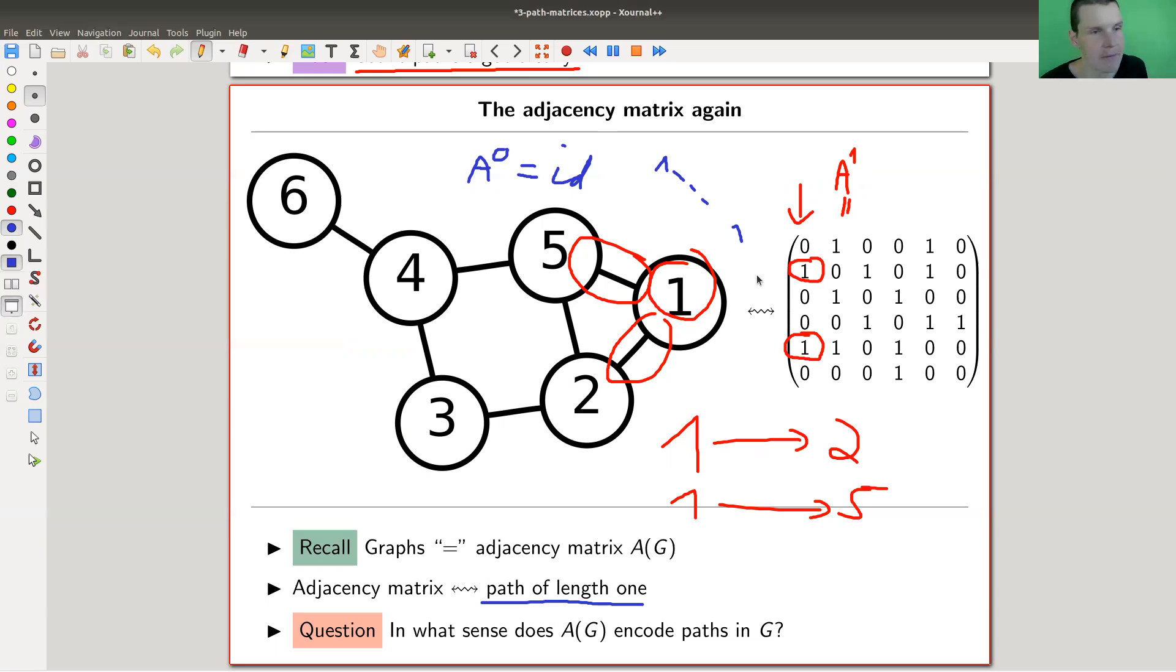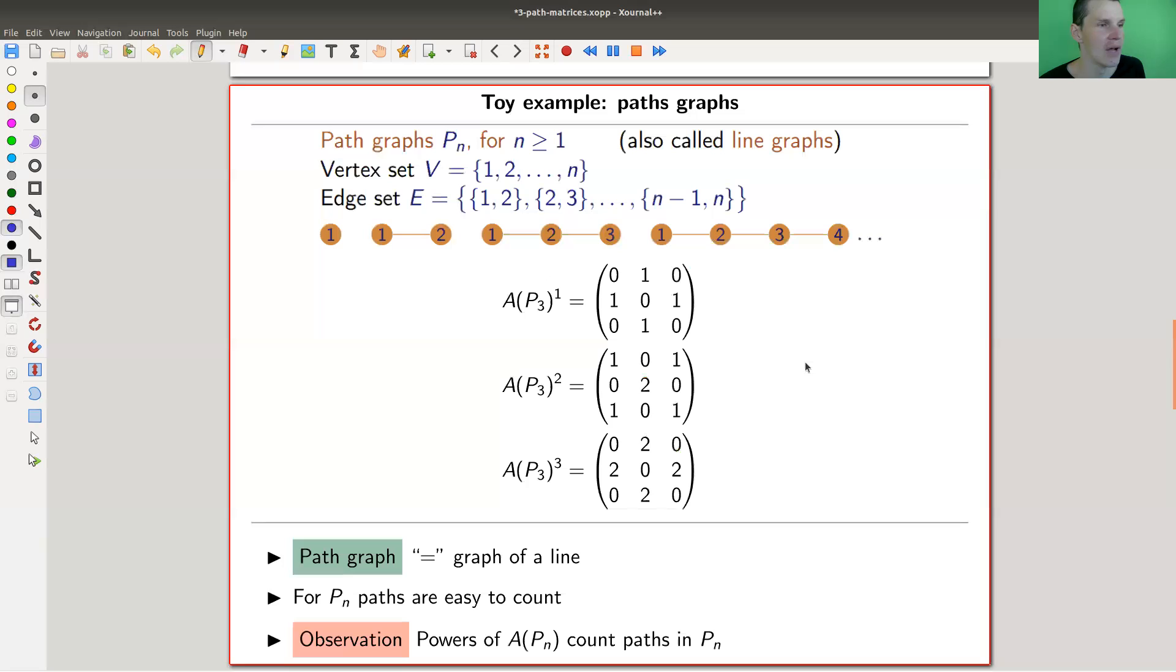So we might guess - maybe a little bit too much of a guess right now, but we'll see that it's true. Oh god, that was a spoiler. Now we can quit the video. Anyway, that the matrix powers count the number of paths of length equal to the matrix power. To convince you that this is true, let's look at a really simple example.